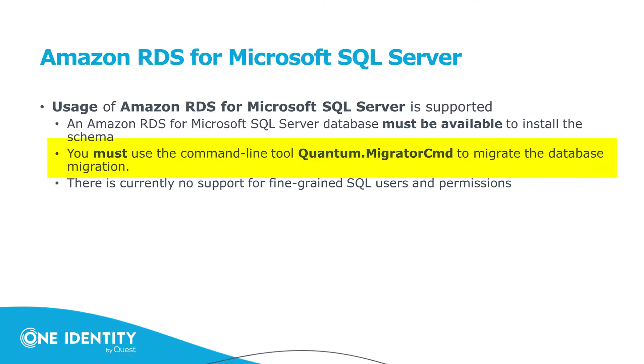Another limitation with the RDS server is that you have to use the Quantum Migrator CMD — the command line migrator — just to install the Identity Manager. Any GUI tools will not work together with that, though this may change in a future version.